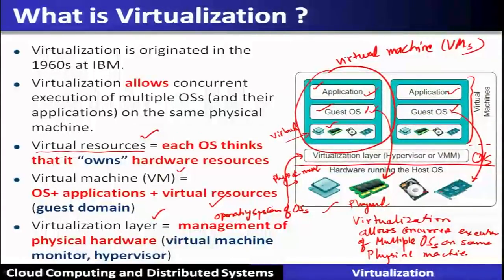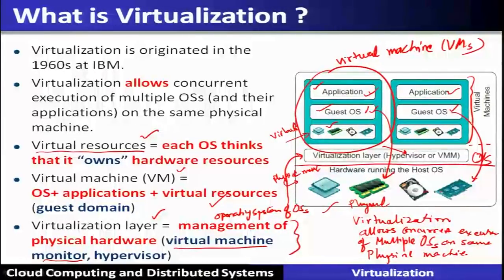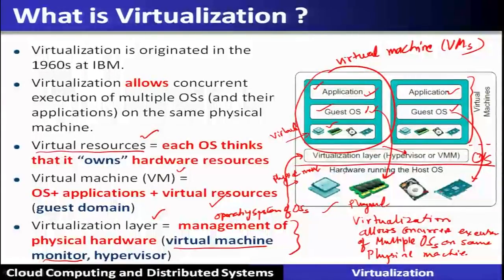The virtualization layer is also called a hypervisor or virtual machine monitor. It is nothing but an operating system of operating systems. The operating systems of the virtual machine require management and support by this virtualization layer — the hypervisor — which manages the physical hardware resources and provides a virtualized view to the several guest operating systems.